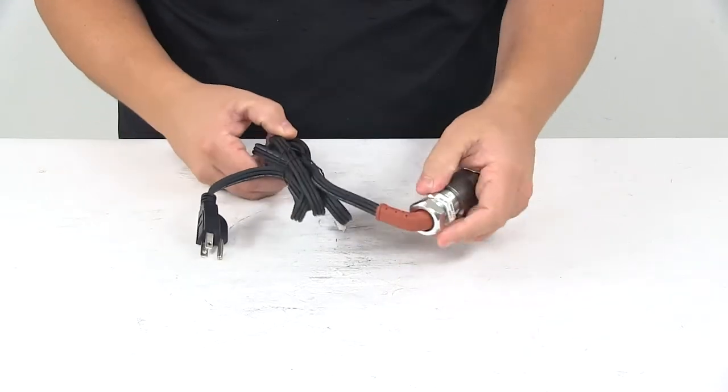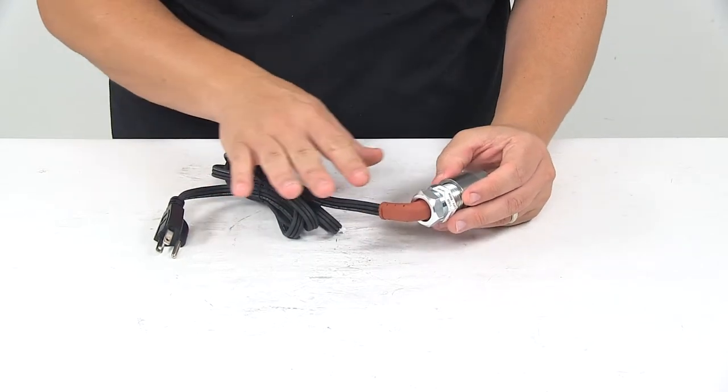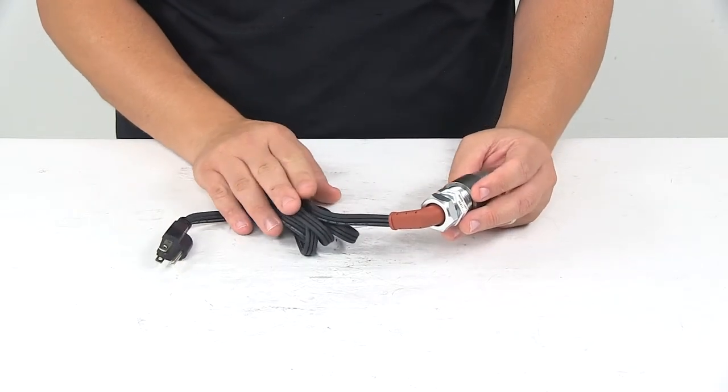It includes the removable power cord. The neat thing about this is if your cord ever becomes damaged you don't have to replace the whole unit, you just have to replace the cord.